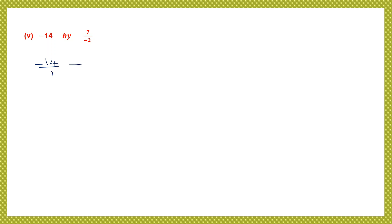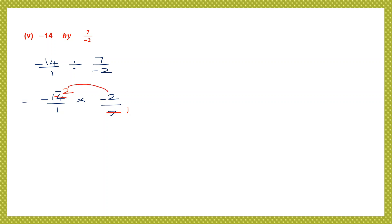Question 5: minus 14 by 1 divided by 7 by minus 2. First number remains as is — minus 14 by 1. Division changes to multiplication; reciprocal of 7 by minus 2 becomes minus 2 by 7. Cancel 7 and 14 giving 1 and 2. Numerators: minus 2 into minus 2 — minus times minus is plus — 2 twos are 4. Denominator: 1 into 1 is 1. Final answer is 4.